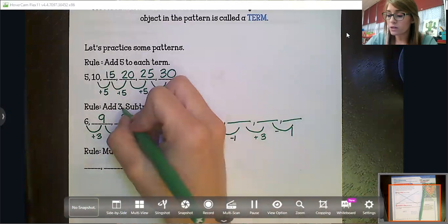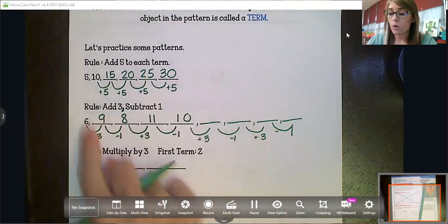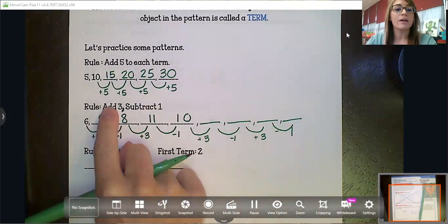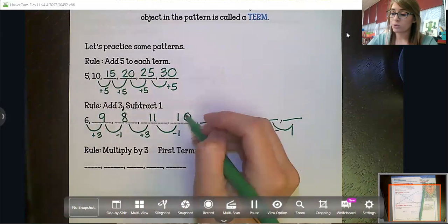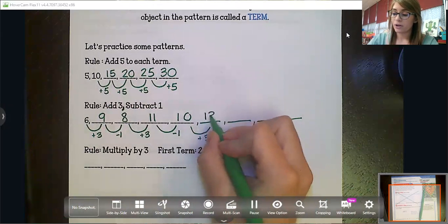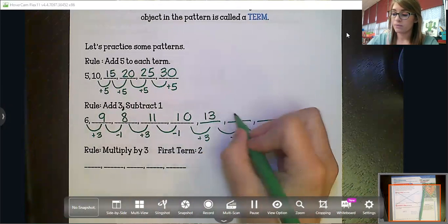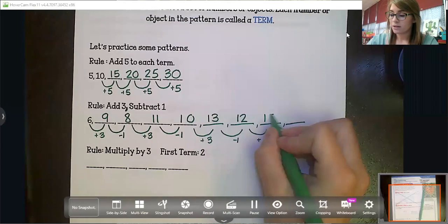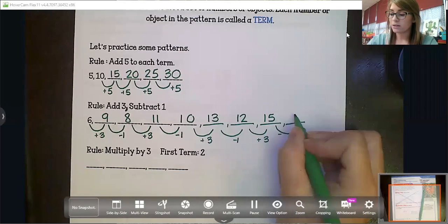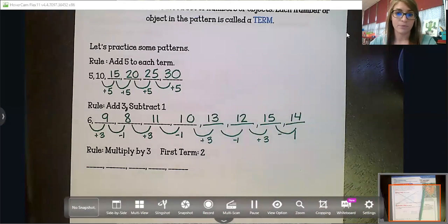So if they're separated by that comma, they want you to do one, get that term, then do the other and get that term and then start over. So if we were to add three, 13 minus one is 12, add three, 15 minus one is 14.